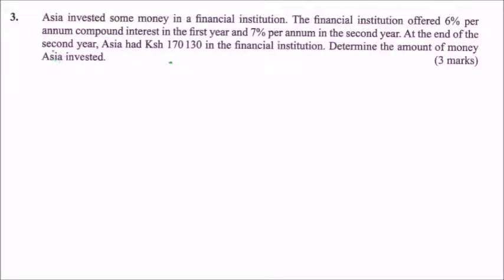So here we start by saying the 170,130 is the money he got at the end of the second year. So this is equals to the amount he had obtained in the first year, multiplied by 1 plus, the second year was 7% of 100.